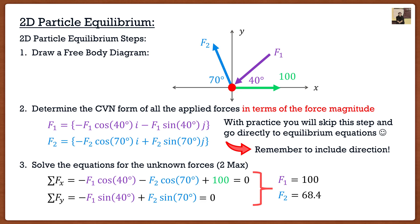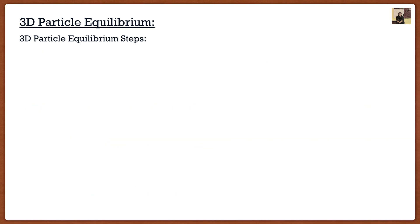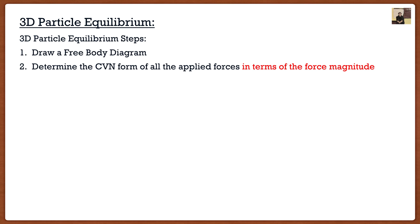That's all you do in particle equilibrium — that's why students love this exam question, it's fairly simple. You might be excited, but then the professor hits you with a 3D question. Well, 3D is going to be the exact same steps. There's only one thing that makes it harder, and that is determining the vector components. First step: draw a free body diagram. For particle equilibrium, you're basically just drawing a dot and drawing all the forces on it. It doesn't have to be to scale, but make it as neat as possible.